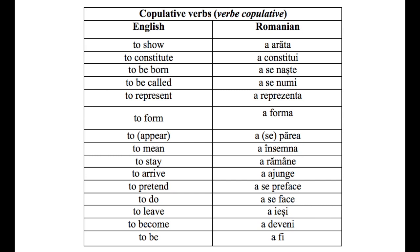Let's look at this chart. On the left you have the English version and on the right the Romanian. A arăta. A constitui. A se naște. A se numi. A reprezenta. A forma. A se părea. A însemna.